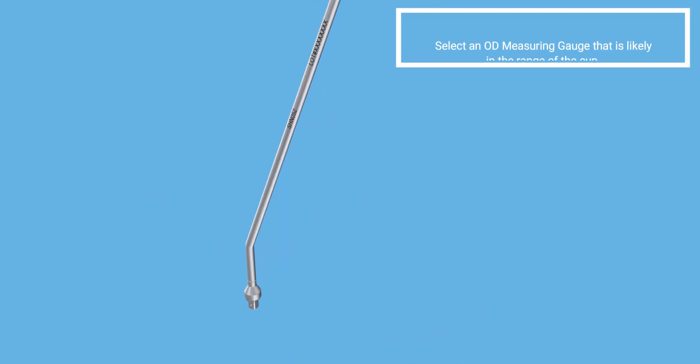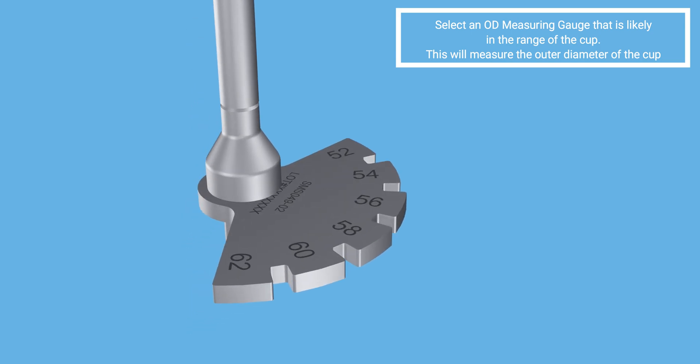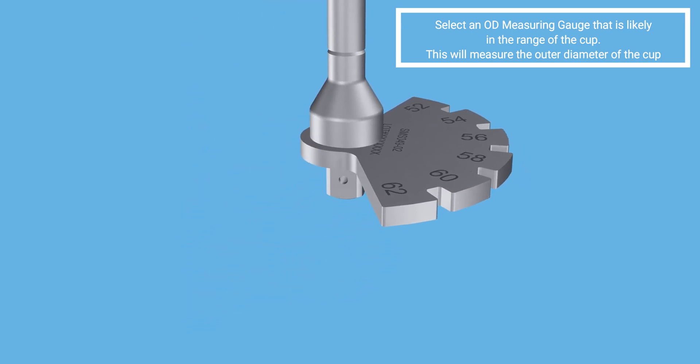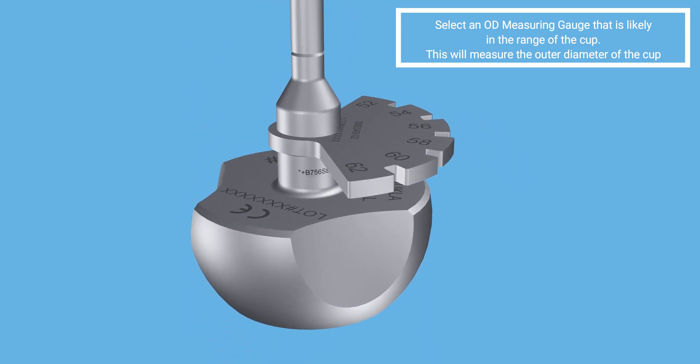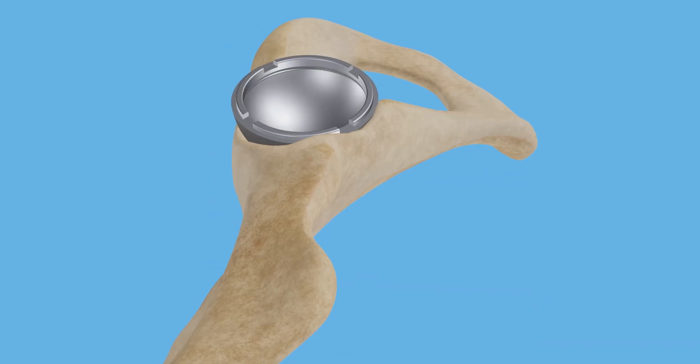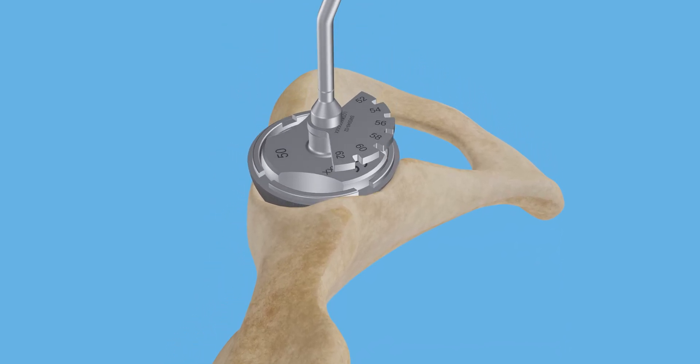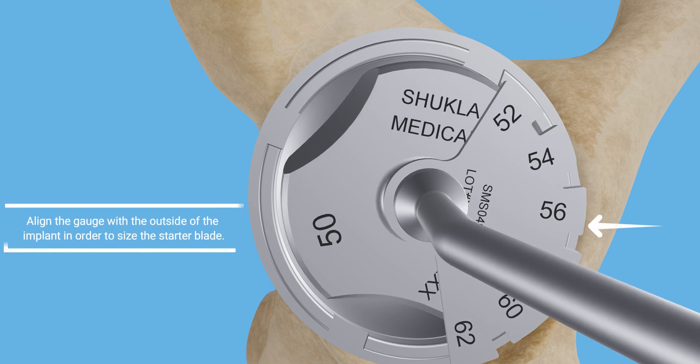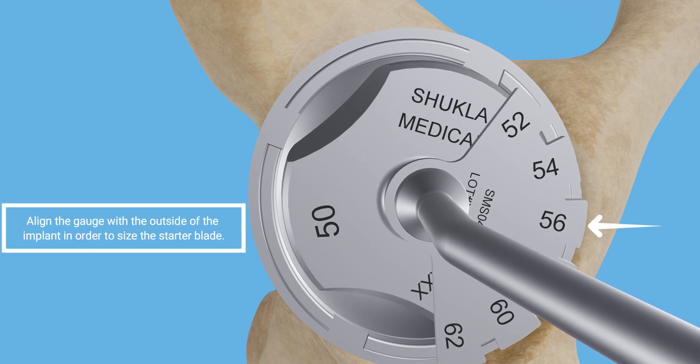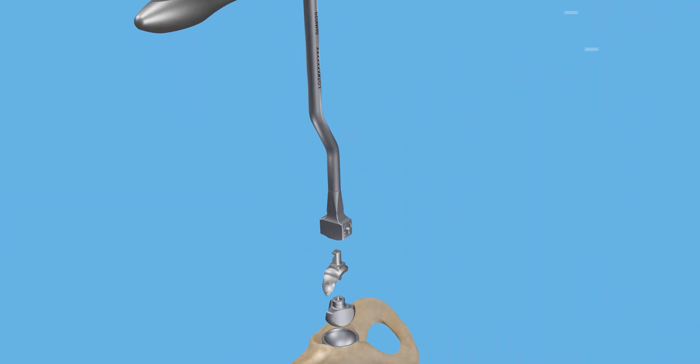For accurate sizing of the starter and finisher blades, assemble OD gauge handle with the OD measuring gauge and centering ball or bob. Align the OD measuring gauge parallel to the cup surface. Find the number on the gauge that correctly matches the outer diameter of the cup to choose the correct starter and finisher blade size. Disassemble the previous assembly.